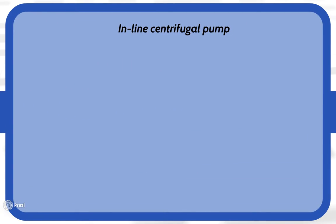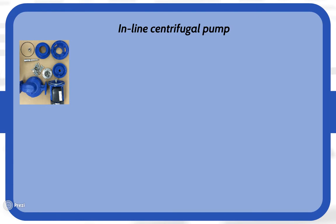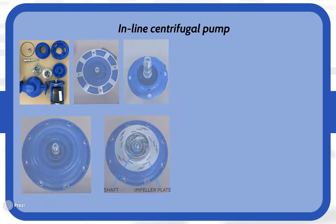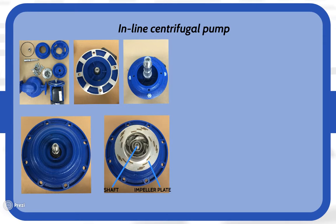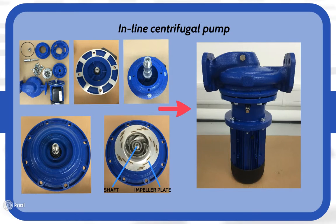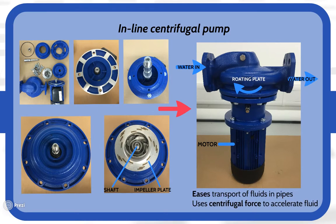The inline centrifugal pump — this is the inline centrifugal pump when in pieces. Firstly, the shaft is fitted into the motor where the rotary force is generated. The plate is fitted at the end after a few other necessary parts. Finally, the housing for the plate, which also guides the water flow. Some of the main industries they are used in are the food, beverages, pharmaceuticals and light chemical industries.